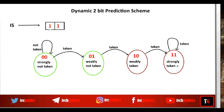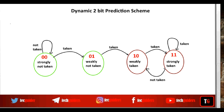At any time if our prediction goes wrong, from the strong state we move to the weak state predicting that the branch will be taken. So with 1 misprediction, we remain in the predict taken state itself. And with 1 more misprediction, we move to the predict not-taken state.